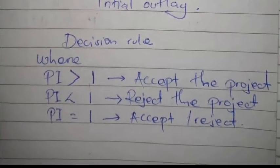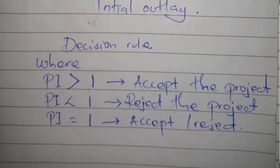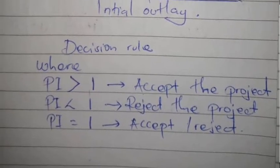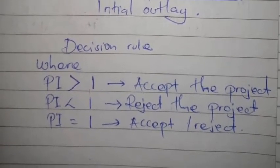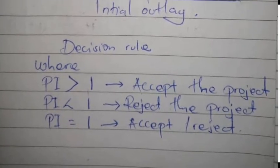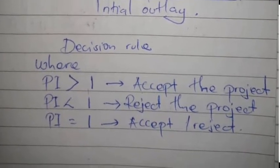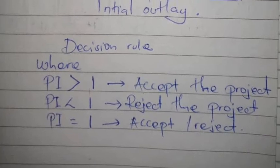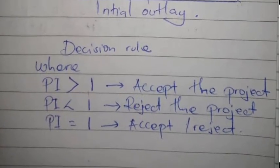The decision rule for probability index is: where the probability index is greater than 1, you accept the project; where the probability index is less than 1, you reject the project; where the probability index equals 1, you accept or reject the project depending on the fund's objectives.